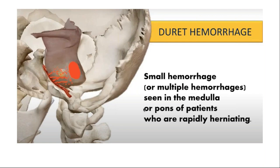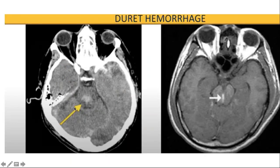If compression continues and paramedian perforating vessels supplying the midbrain and pons rupture, small or large bleeds — called Duret hemorrhages — can occur. Duret hemorrhages can be single or multiple and usually indicate a very bad prognostic sign, sometimes associated with irreversible neurological dysfunction.